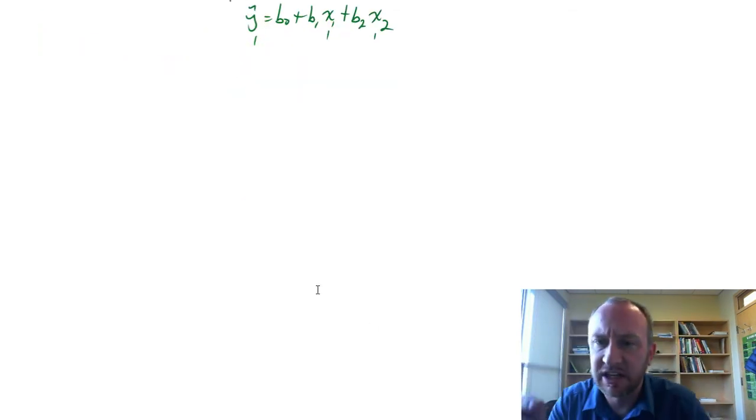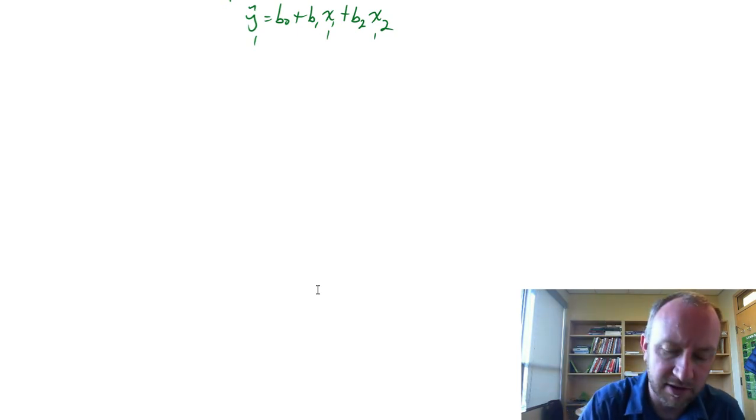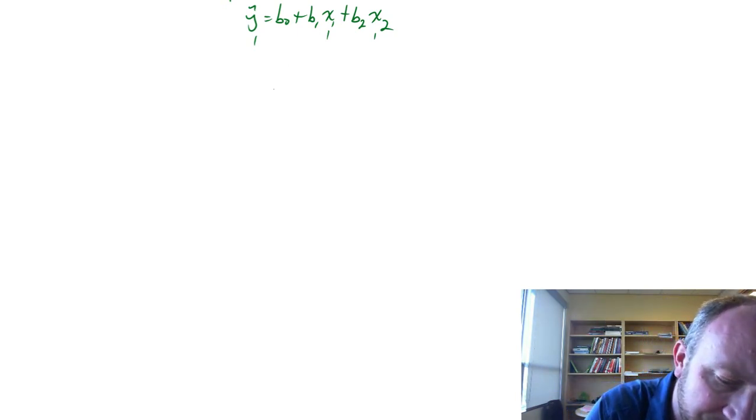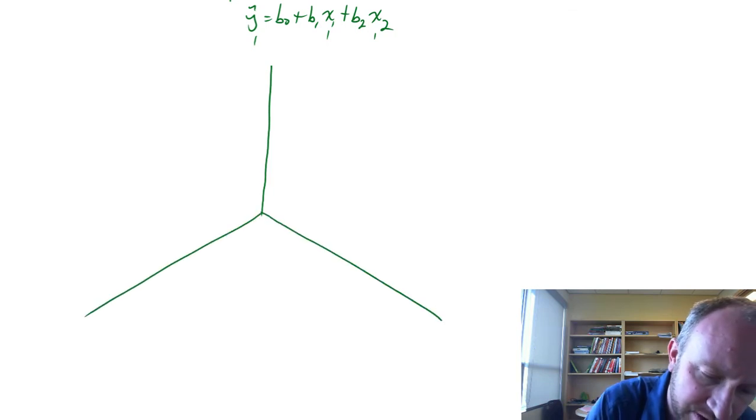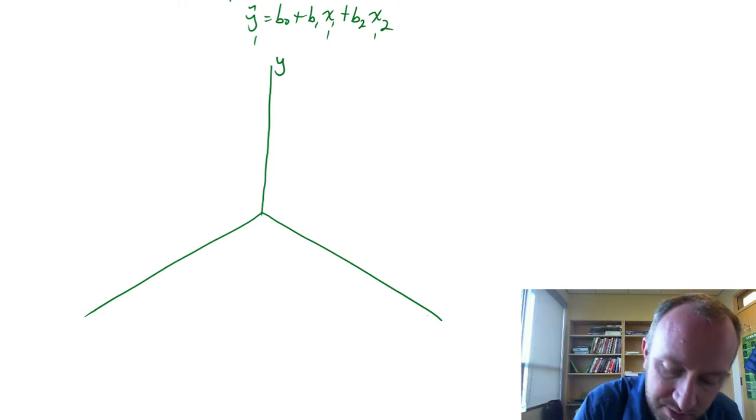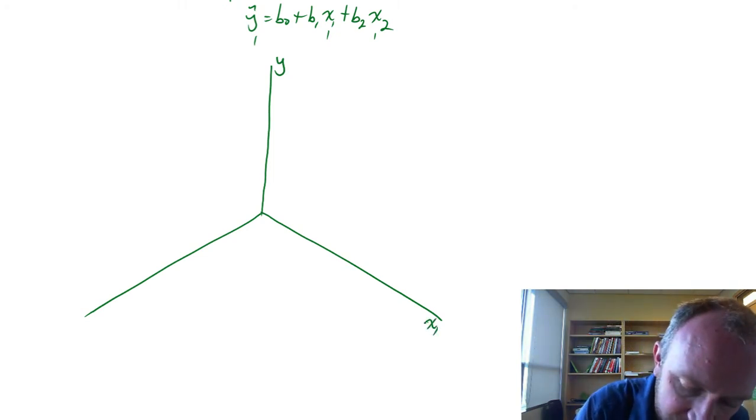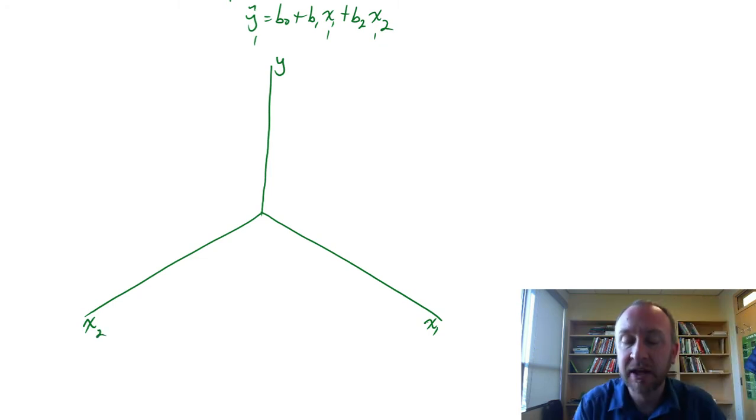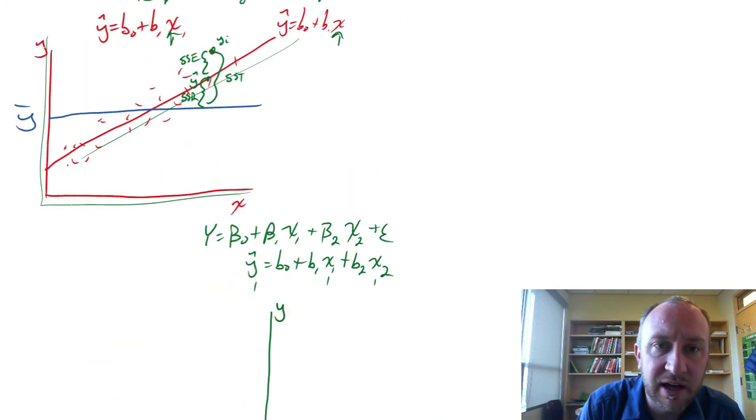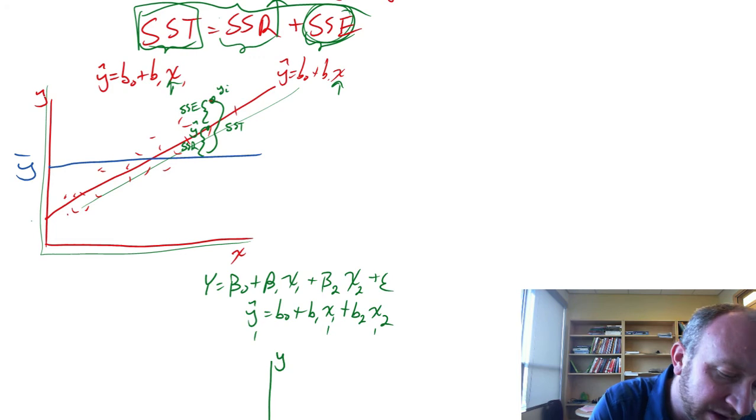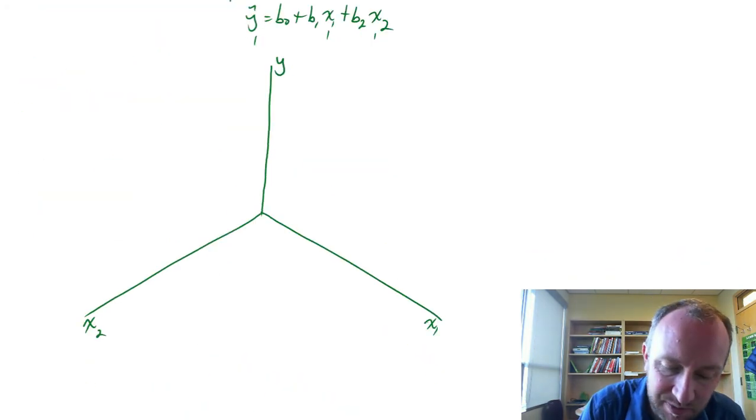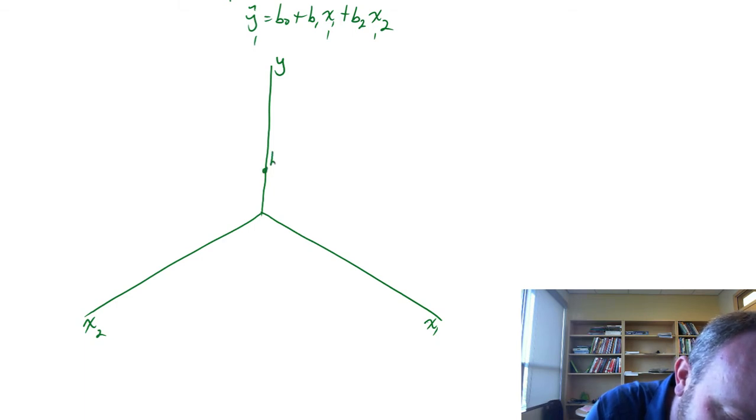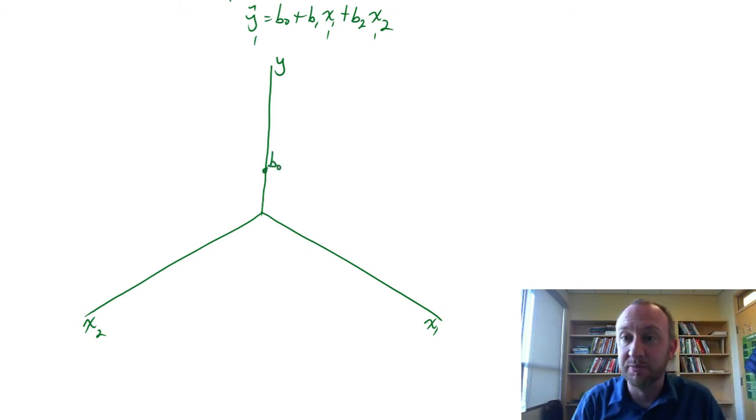So now what we might have is something that looks like this. So here, this is y, this is my dependent variable. This is x1, this is x2. Now, just as we had, if I scroll up here, I had a y-intercept here, b0. Same thing here, somewhere along this y-axis, I have a y-intercept of b0. Now, actually, I'm going to move it up that axis. It will make it a little bit easier to draw, I think. So here's b0.